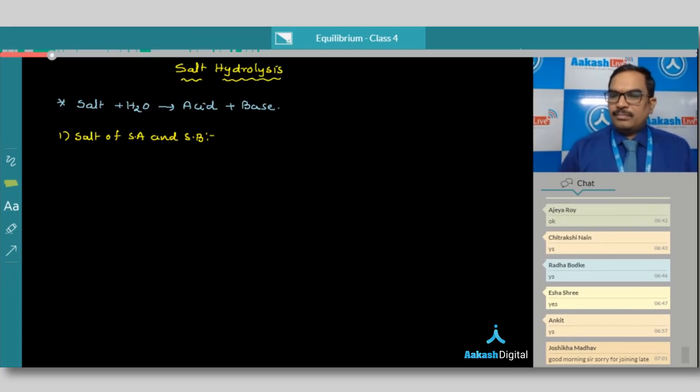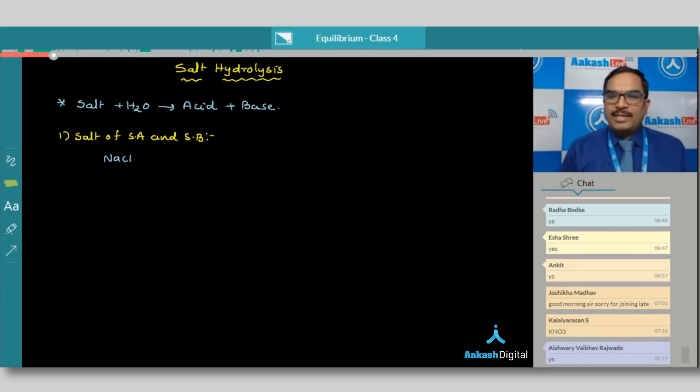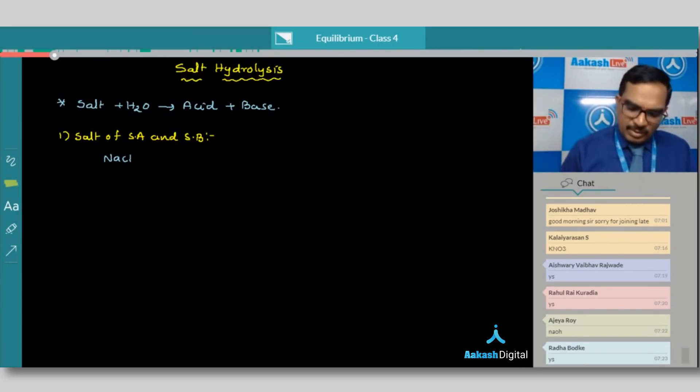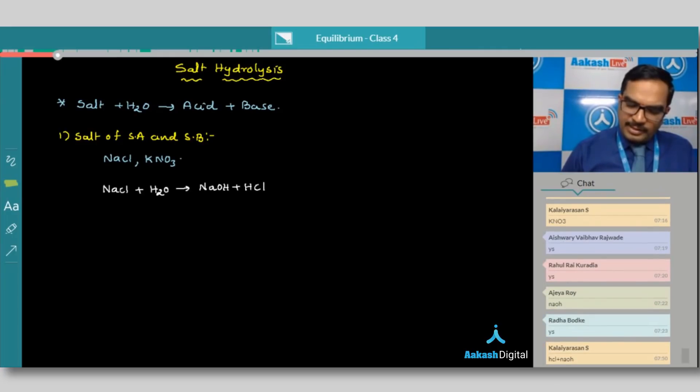For example, sodium chloride. The sodium chloride is the salt of hydrochloric acid and sodium hydroxide. We can take different examples. We can also take KNO3. Suppose as per the definition of salt hydrolysis, suppose I am taking the first salt that is sodium chloride. So the sodium chloride when placed in water, so definitely as per definition, we have to get sodium hydroxide and hydrochloric acid.